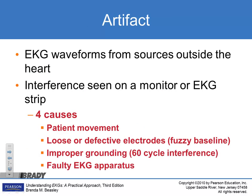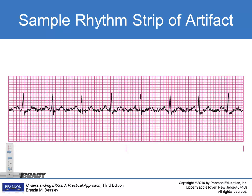Artifact refers to those extra lines on the rhythm strip not coming from the patient. It can be caused by patient movement, loose or defective electrodes, improper grounding, 60-cycle electrical interference from the ambulance, or a faulty EKG apparatus. Make sure electrodes are secure. Remember: treat the patient, not the monitor. If you have a regular rhythm with artifact, stop the ambulance or get a clean recording at the hospital when the patient is holding still.